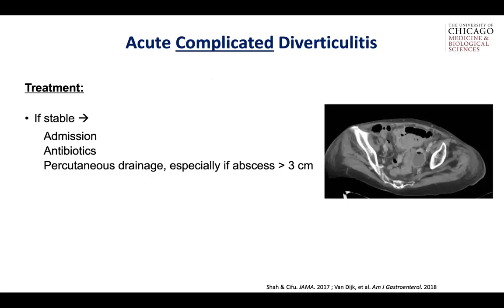What about acute complicated diverticulitis? If they're stable, it's relatively easy — they're admitted, they get antibiotics, they get percutaneous drainage, and these patients usually will do fine and go home. Similar to the uncomplicated patients, they'll often show up in the surgeon's clinic to discuss the need for a prophylactic sigmoid resection.